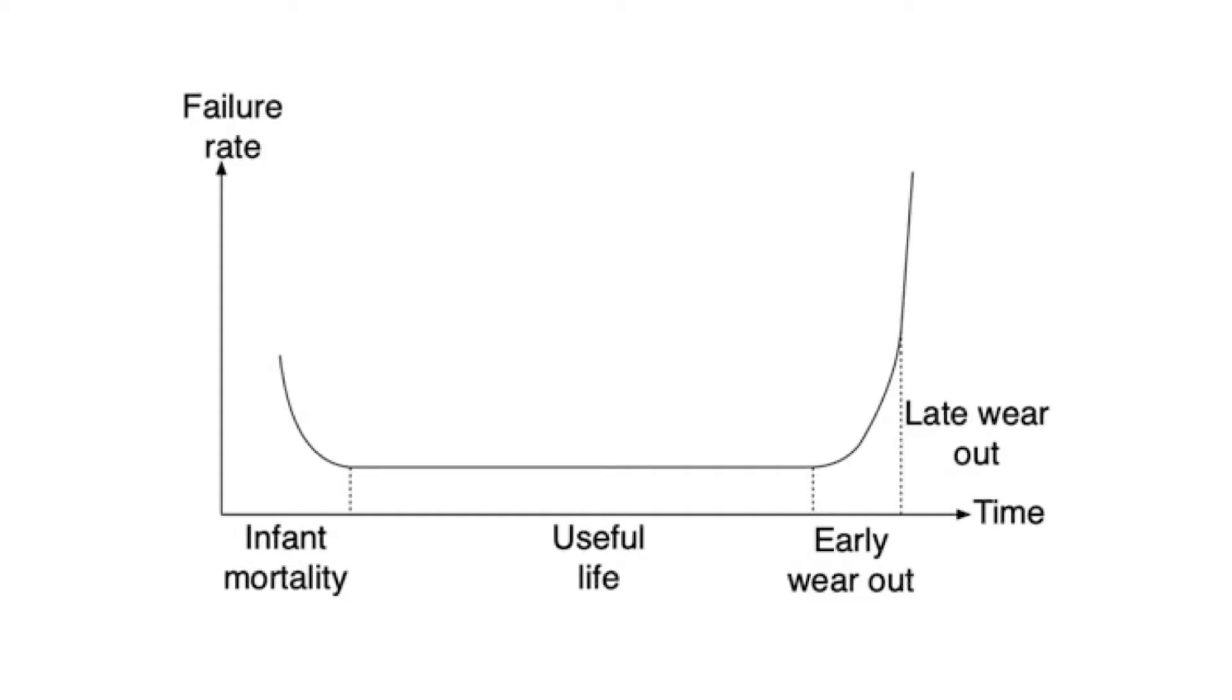Now the way we characterize reliability is usually through something called failure rate. Failure rate is the number of failures that occur over a period of time, so it's measured per unit time because it is a rate. It is given the symbol lambda and is measured in terms of the number of failures per unit time.